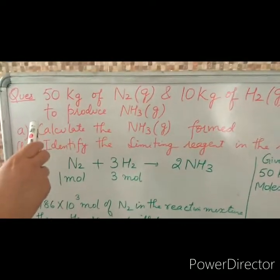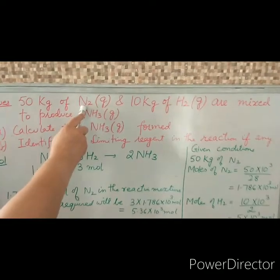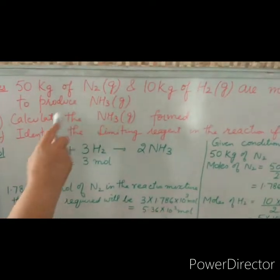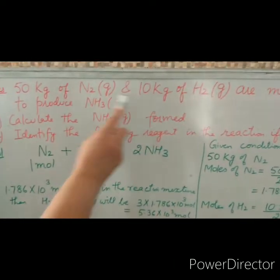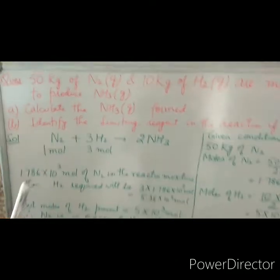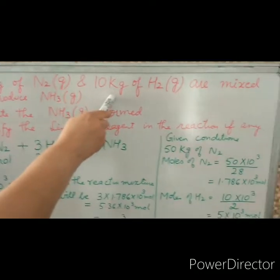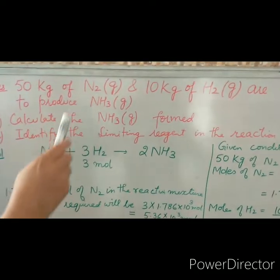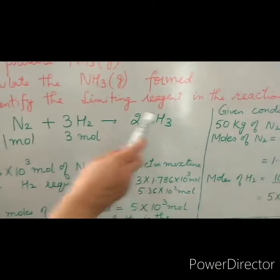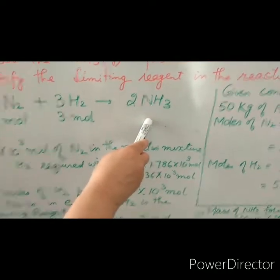Let us discuss one more numerical based on the concept of limiting reagent. 50 kg of nitrogen and 10 kg of hydrogen are mixed to produce ammonia. Calculate the ammonia formed and identify the limiting reagent in the reaction if any. The balanced chemical equation shows nitrogen combines with hydrogen to form ammonia: 1 mol of nitrogen, 3 mol of hydrogen, and 2 mol of ammonia.